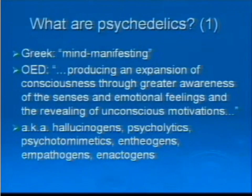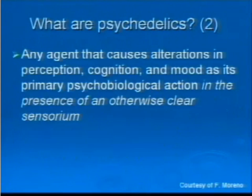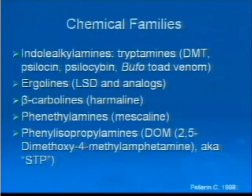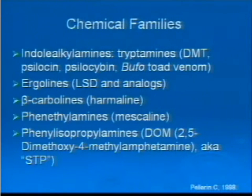Which term you use depends on which one you favor and also how you're using the chemical. A more pharmacological definition of psychedelic is any agent that causes alterations in perception, cognition, and mood as its primary psychobiological action in the presence of an otherwise clear sensorium. The chemical families which constitute psychedelics are five main families. The tryptamines fall into the bigger family of the indolalkylamines, and the tryptamines include DMT, psilocin, psilocybin, and the active ingredient in bufo toad venom,